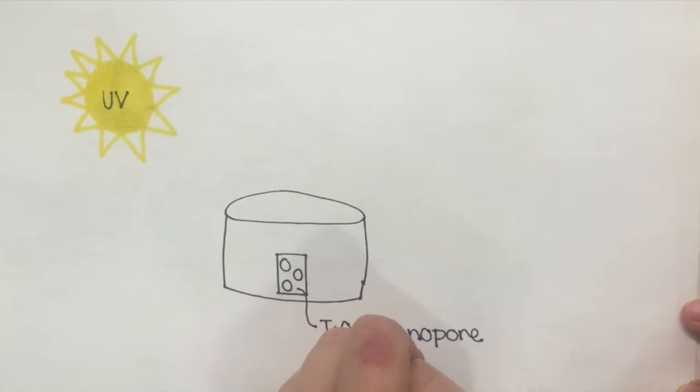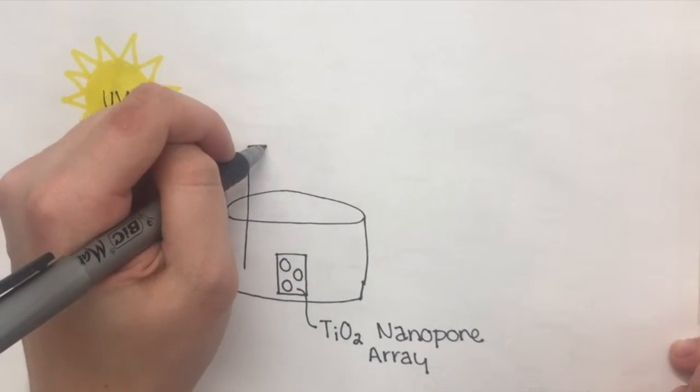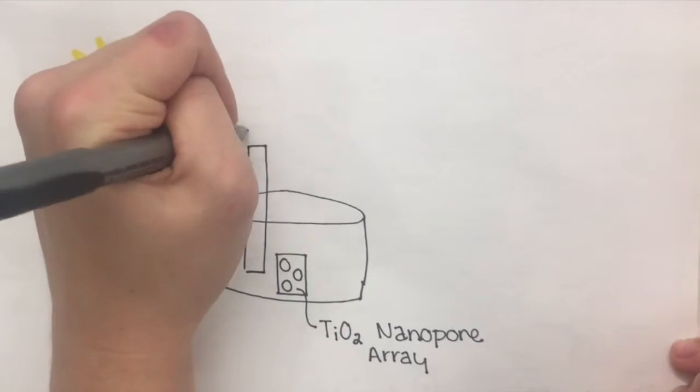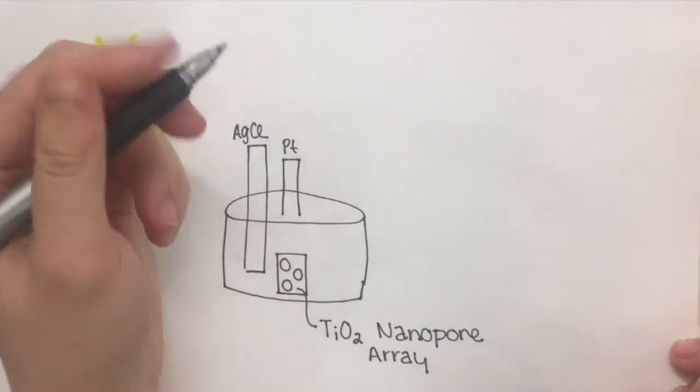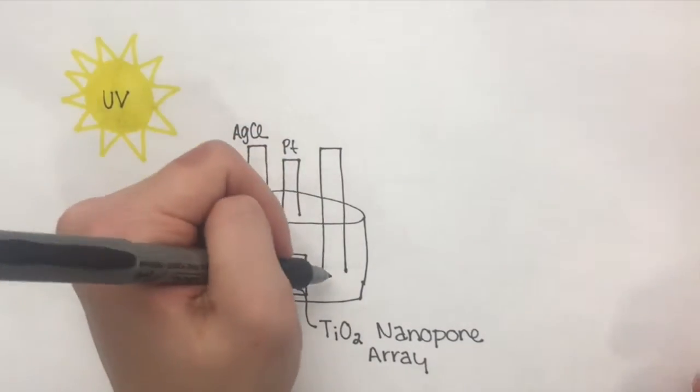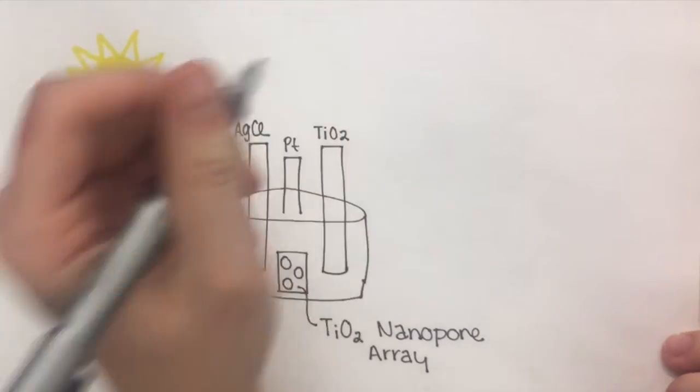These trials are typically carried out in a quartz reactor involving a three-electrode system. The three electrodes include a platinum foil counter-electrode, a saturated silver chloride reference electrode, and a titanium dioxide work electrode.